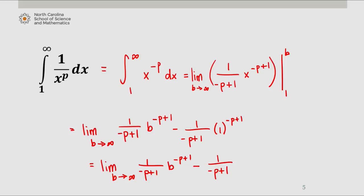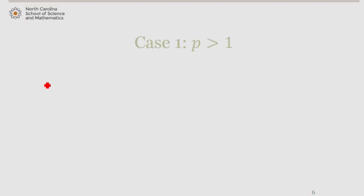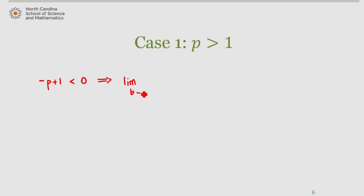Now let's consider the two cases that make the difference here. Case 1: when p is greater than 1. If p is greater than 1, then negative p plus 1 is less than 0, which tells us that the limit as b approaches infinity of b to the negative p plus 1 is equal to 0. So the integral must converge. According to the integral test, this tells us that the series converges for p greater than 1.